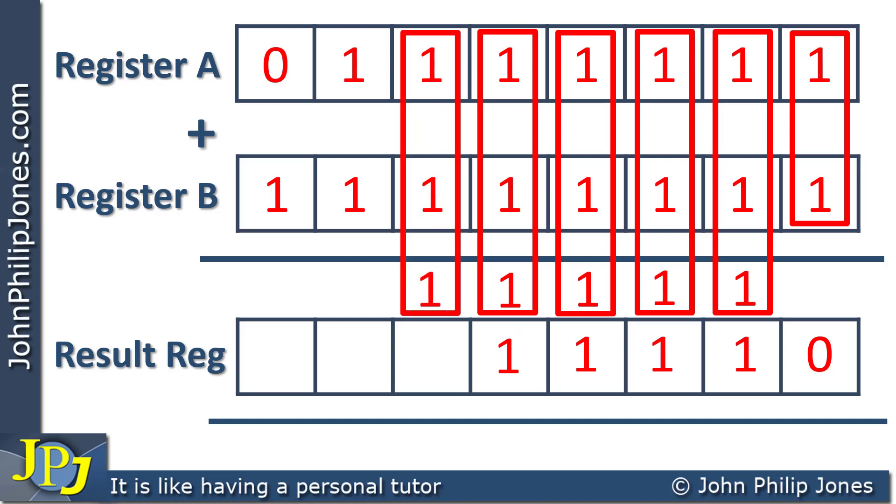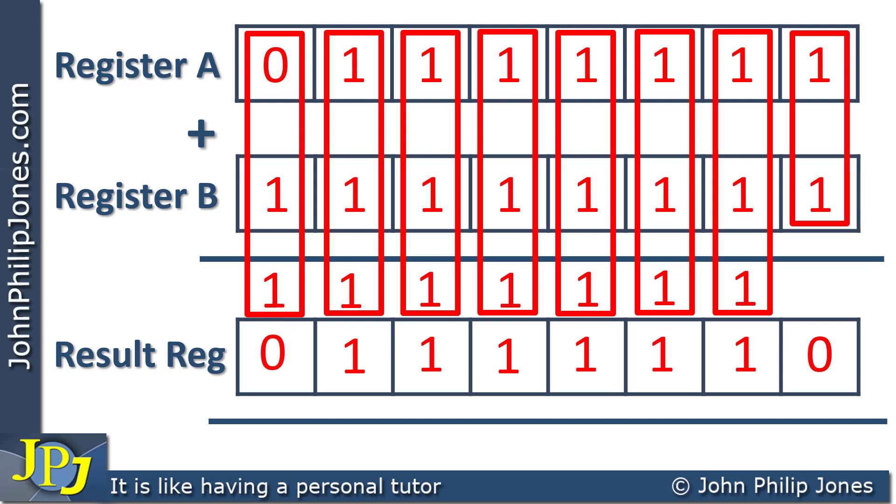We then add up this column, which is again 1 down, carry 1. We then add these three ones up, which is obviously 3, which is 1 down and carry 1. And then we add up this column here, which is 0 plus 1 plus 1, which is 2, which is 0 down and carry 1.